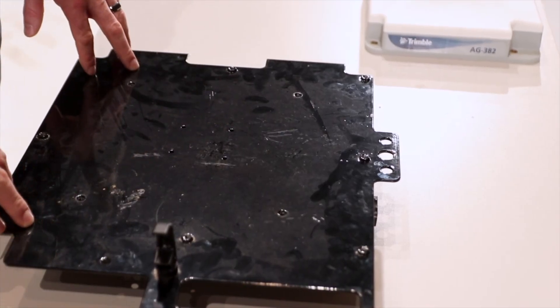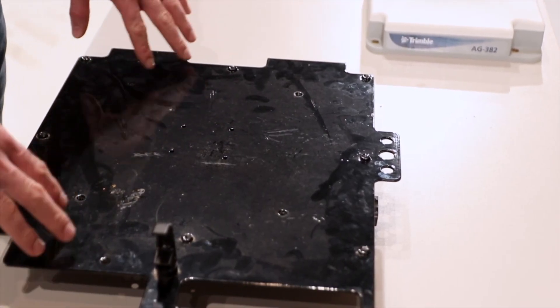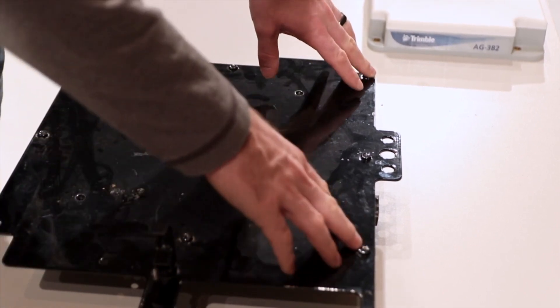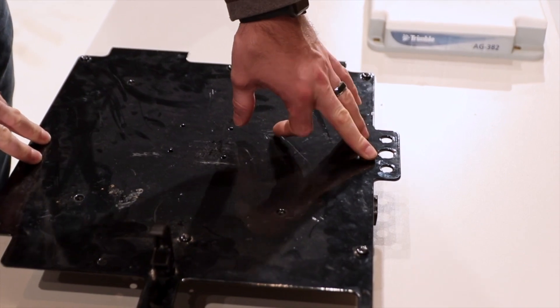This is what you'll get when you get a guidance-ready tractor. You'll get this bracket with the housing underneath it. To take this bracket off, there are a few torque screws here that you'll have to remove to get to the inside.